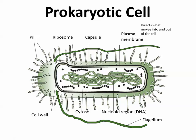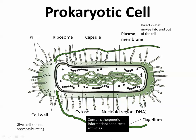Here are a few of the functions: the plasma membrane directs what moves into and out of the cell. The cell wall provides general protection and prevents bursting. The nucleoid region contains genetic information that directs the cell's activities. DNA codes for proteins through transcription and translation, and ribosomes are the ones that actually produce those proteins.